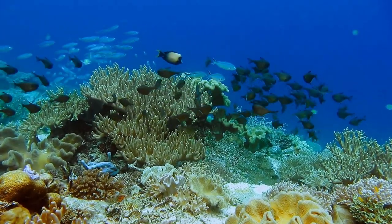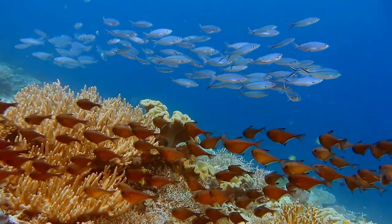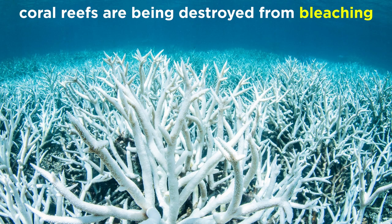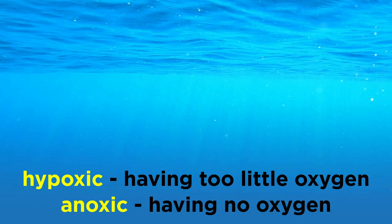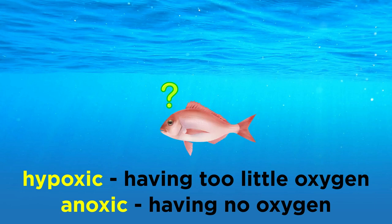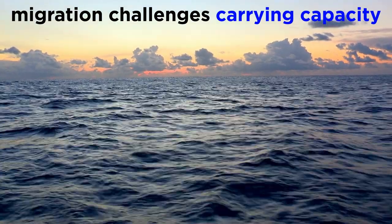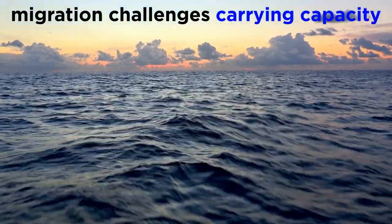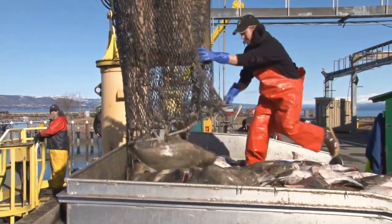Already coral reefs are being affected by warmer equatorial water temperatures. They're stressed and bleaching as a result, a phenomenon we discussed over in the zoology series. Where there were once beautiful colored reefs, there are now only skeletal remains. As ocean waters warm, they are also less able to hold gases such as carbon dioxide and oxygen. This has led certain regions to become oxygen-limited, or even anoxic, meaning they contain no oxygen. Species of marine life reliant on oxygen will be forced to migrate to waters with higher oxygen levels, representing issues regarding local carrying capacity and even human conflict when it comes to fishing territories and international governance.